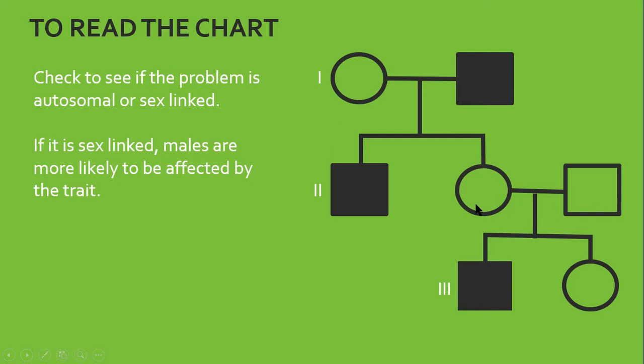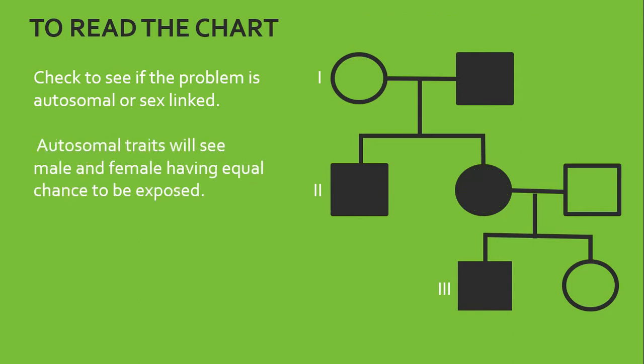The square in the second generation, that person is introduced to the family. So of course, that square is not shaded. That person is not affected by the trait, being that they have been introduced to the family. However, the square they are in, or the individual, at the third generation, they are represented by the square. That person is indeed affected by the trait. Autosomal trait will see male and female having equal chance to be exposed. So if you observe here, we are having both male and female being exposed to the trait.